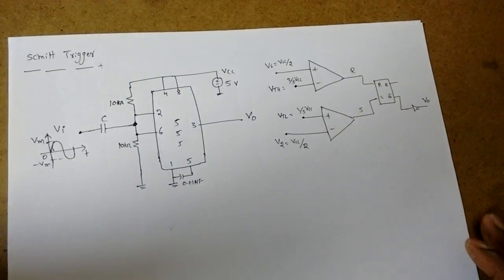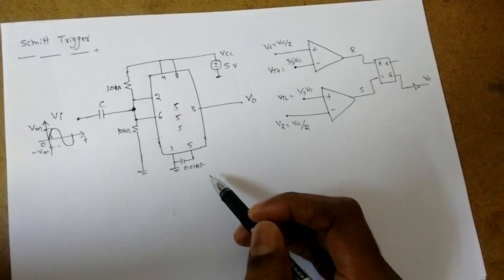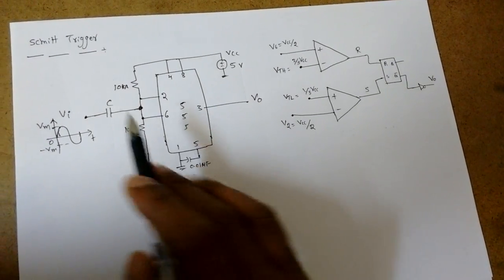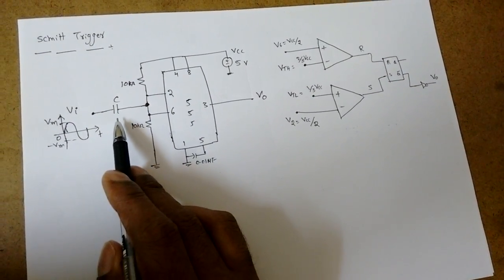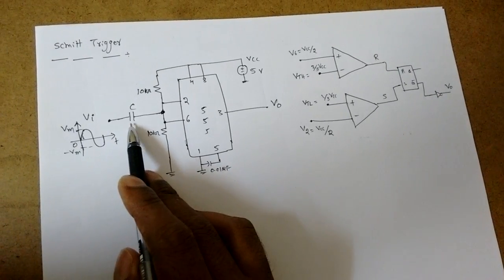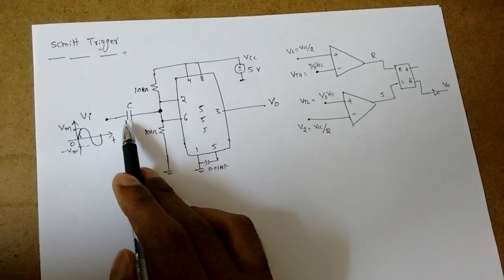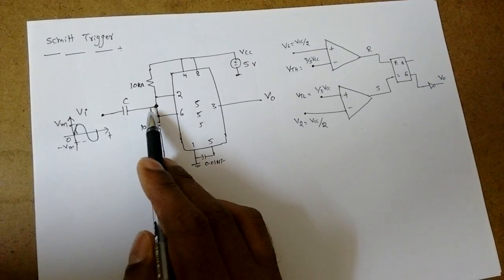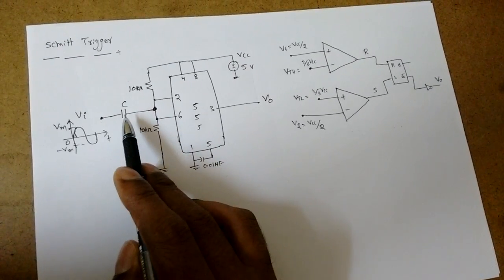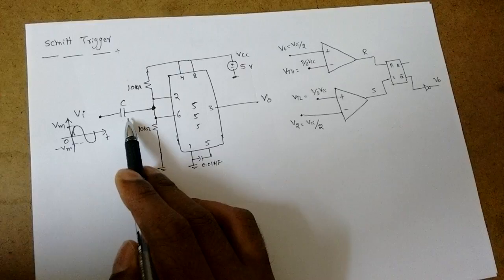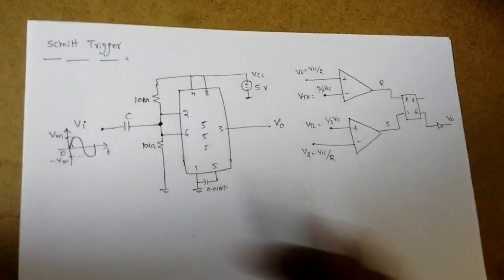But how does the 555 timer act as a Schmitt Trigger? If you see, suppose the capacitor is there - generally the capacitor is a coupling capacitor. So for AC analysis capacitor will be short circuit, so VI will be connected directly here. For DC analysis it will be open circuit.